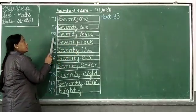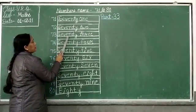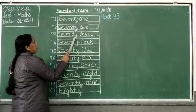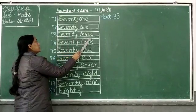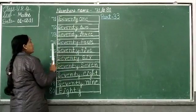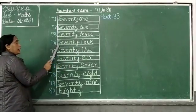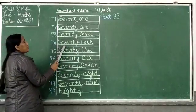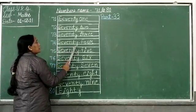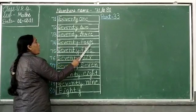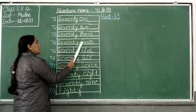73: S-E-V-E-N-T-Y 70, T-H-R-E-E 3, 73. 74: S-E-V-E-N-T-Y 70, F-O-U-R 4, 74.